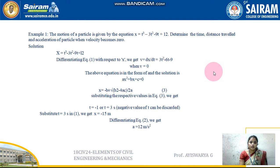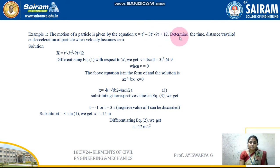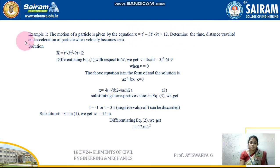In this lecture video, we are going to see how to calculate using given equations. In Example 1, the motion of a particle on a rectilinear path is given by the equation X = T³ - 3T² - 9T + 12. Determine the time, distance travelled, and acceleration of the particle when velocity becomes zero.